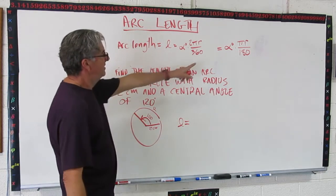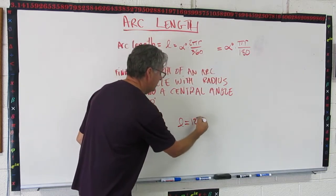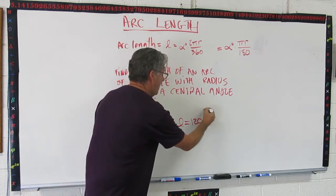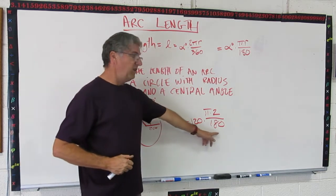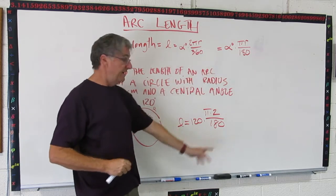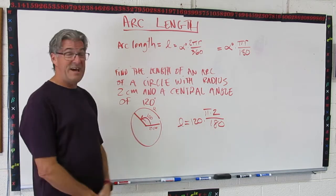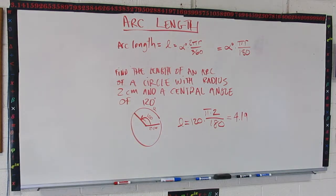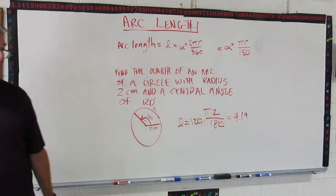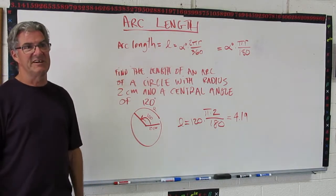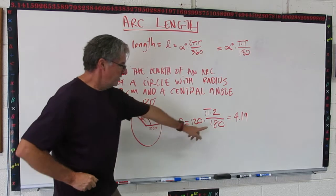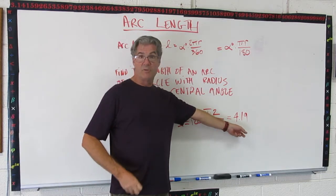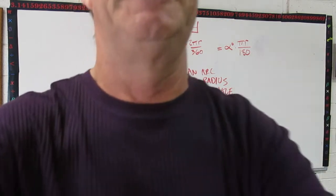L equals the angle 120 times π times 2 over 180. Just like that. And I know you've heard this before. But make sure you show me the plug-in step when you do a problem using a formula. That tells me what you're thinking is. It's also a quick way to catch mistakes. So I did my calculation. Put it all in my calculator. You want to make sure you can do that correctly. And this is the answer I come up with to three significant figures.